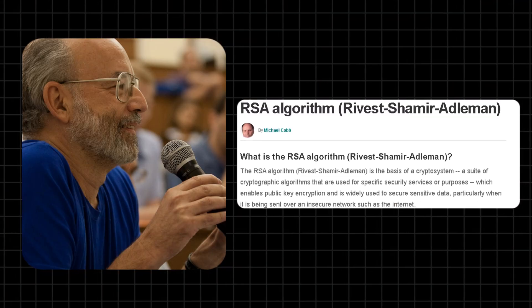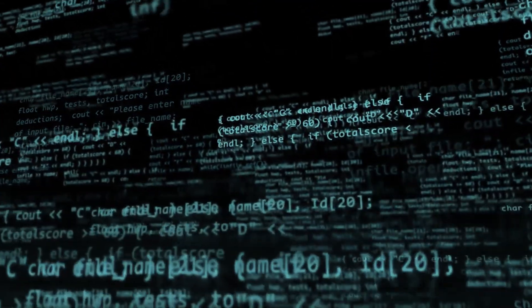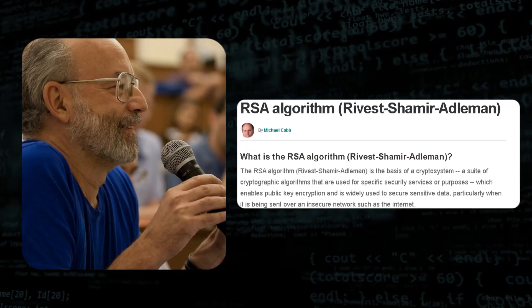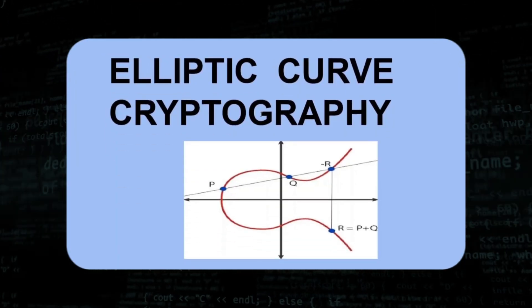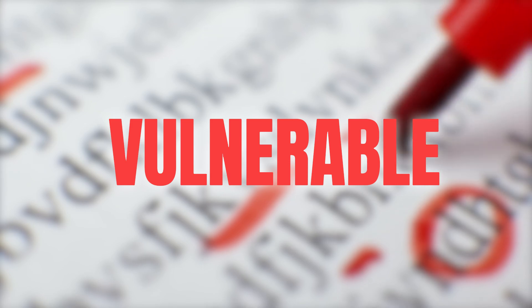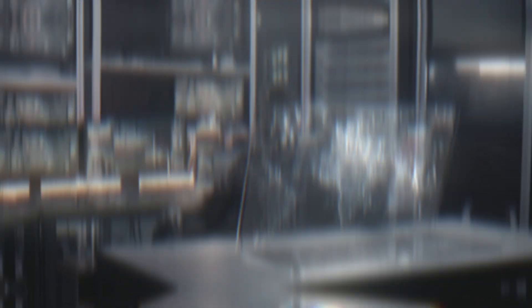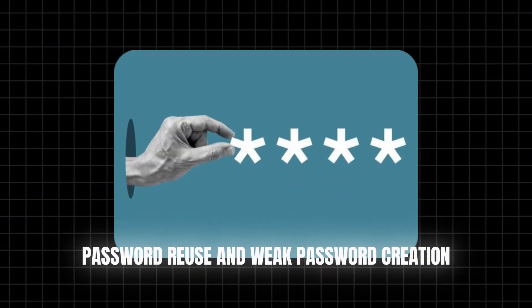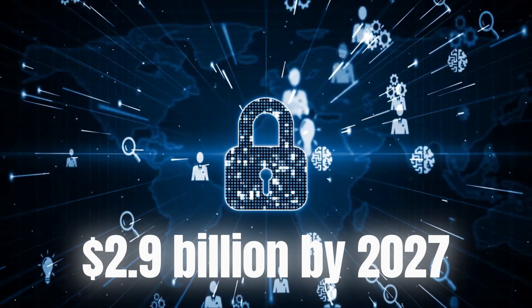RSA and Elliptic Curve Cryptography, or ECC, are two widely used public key cryptographic systems. RSA is based on the difficulty of factoring large composite numbers, while ECC relies on the mathematical properties of elliptical curves over finite fields. Each has its strengths and weaknesses, but both are vulnerable to future quantum attacks. Password managers help maintain strong and unique passwords for multiple accounts, reducing the risk of password reuse and weak password creation. The use of these tools is growing, with the market expected to reach $2.9 billion by 2027. Imagine having a digital vault that securely stores all your keys and autofills them as needed.